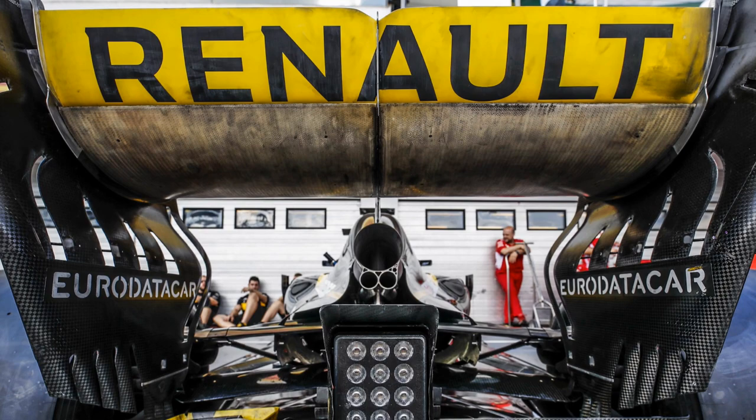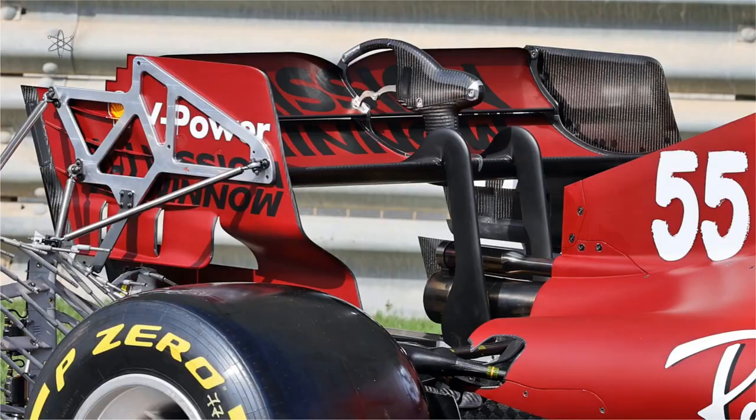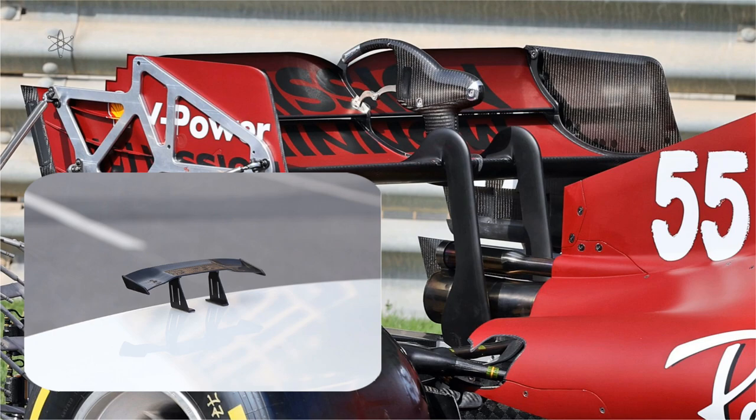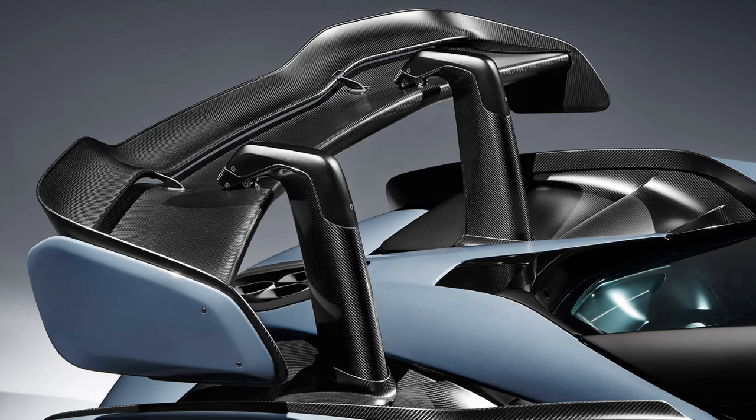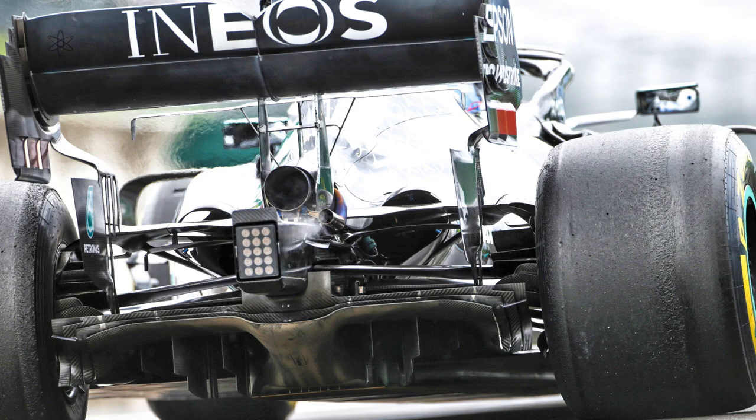On the onset, a top mount swan neck wing stand might actually look to be more detrimental to rear wing performance than a direct bottom mount aerofoil-shaped wing stand, because it is in the way of both the lower and upper section of a rear wing's airflow. Yet it is the choice used on contemporary racing cars.